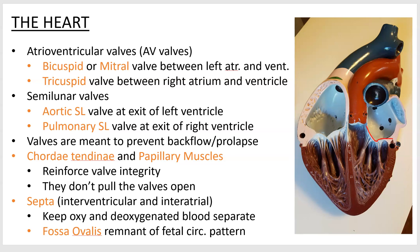The bicuspid valve is on the left side of the heart. A helpful mnemonic: if you ask a kid to show how strong they are, they'll show their biceps — so the bicuspid valve is on the strong left side. The interventricular septum separates the left and right ventricles, and the interatrial septum separates the atria — they keep both sides completely separate. One more feature: the fossa ovalis, a remnant of fetal circulation, where there used to be a hole between the left and right atria to mix oxygenated and deoxygenated blood — not something we need once our lungs work.